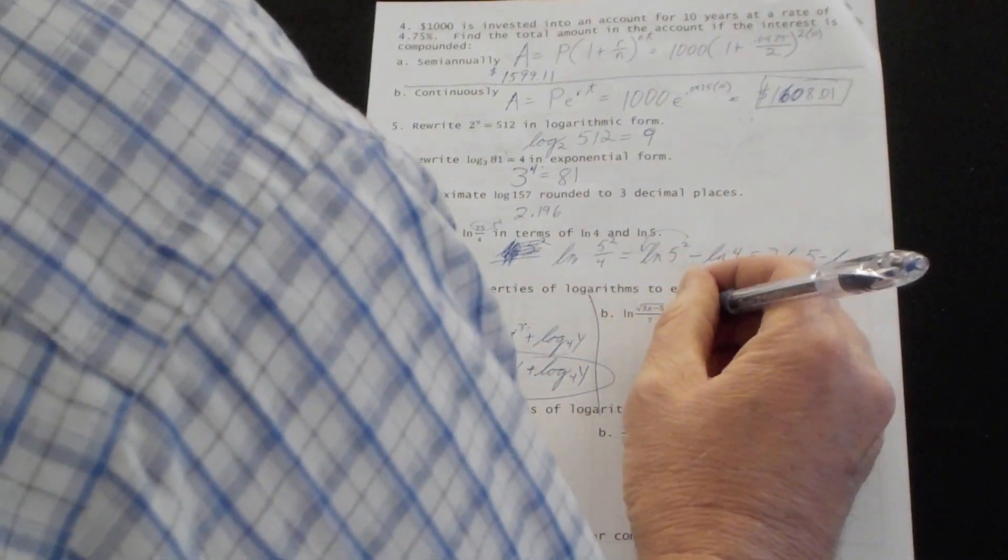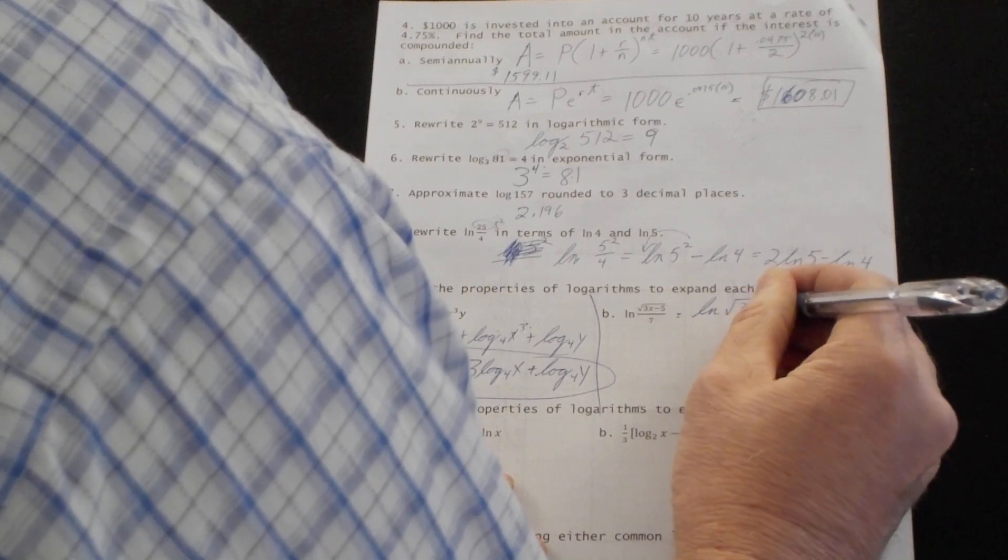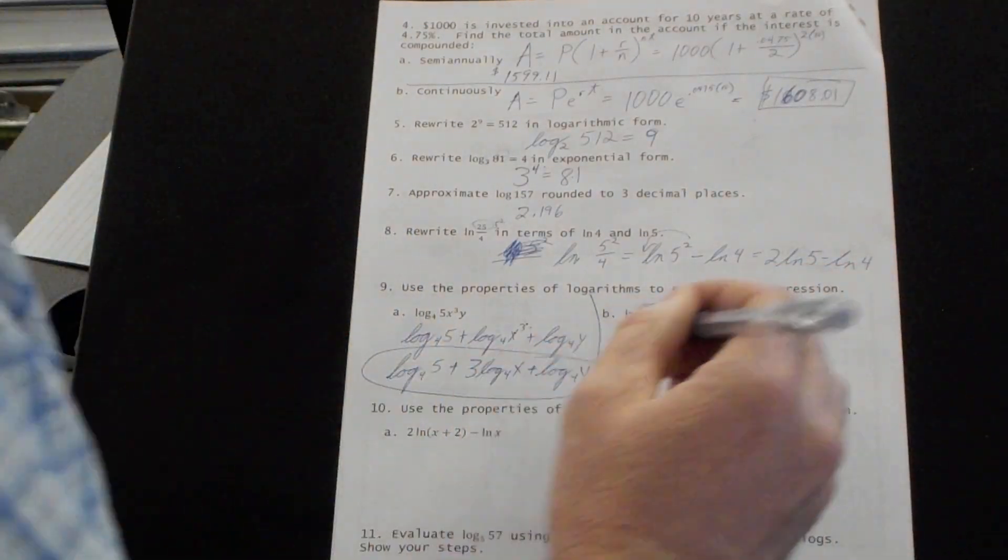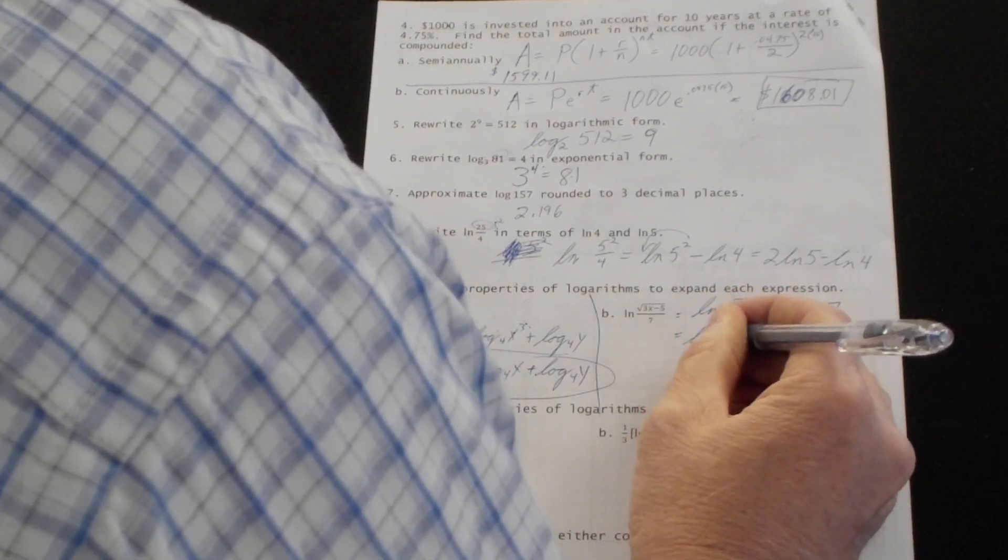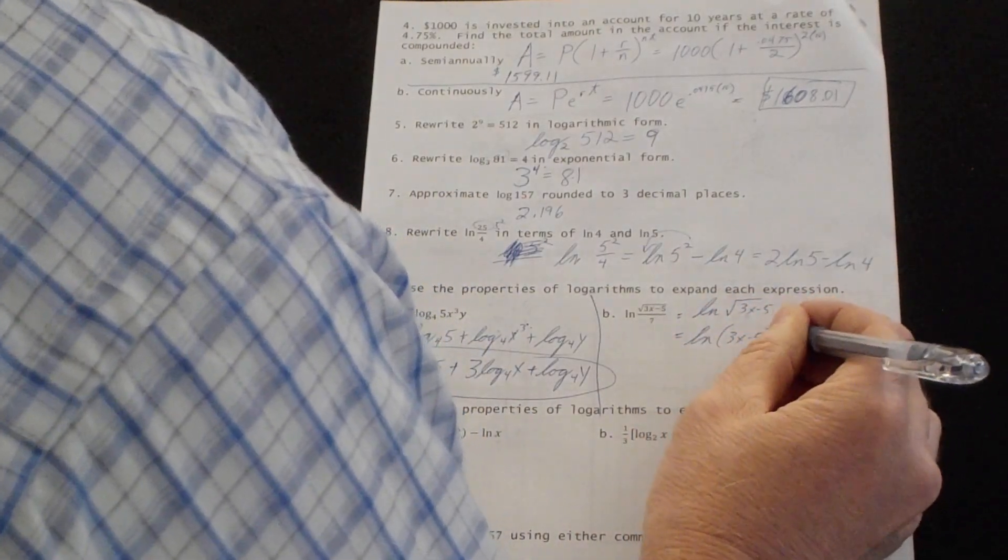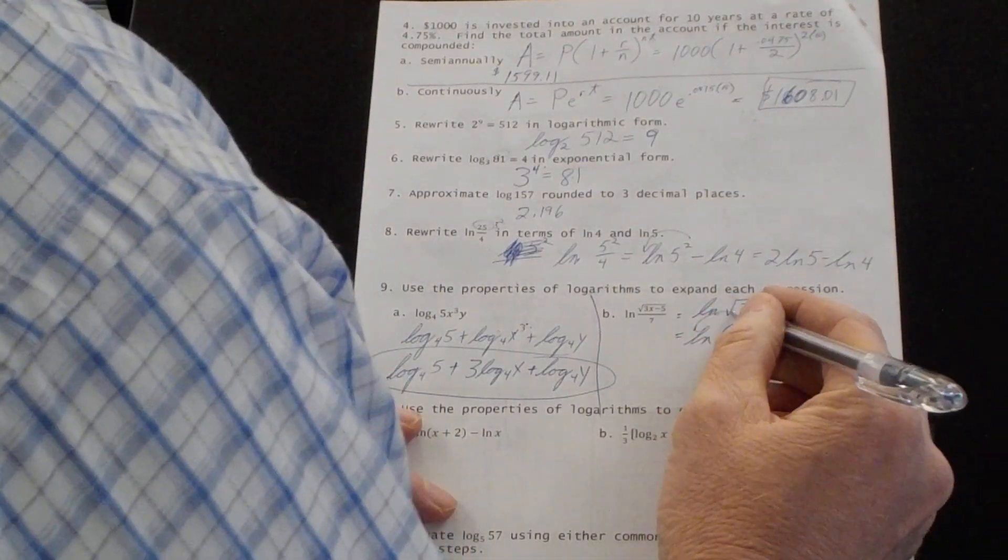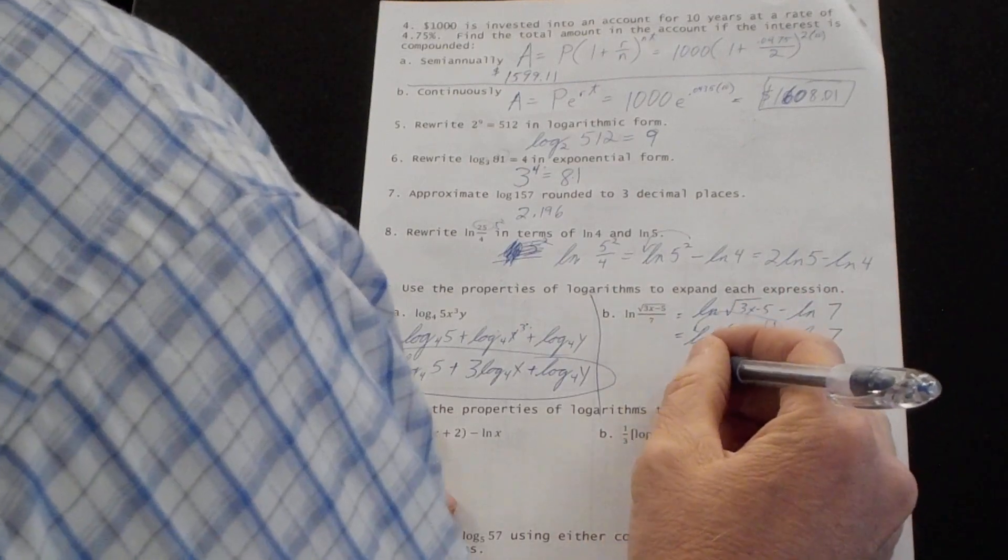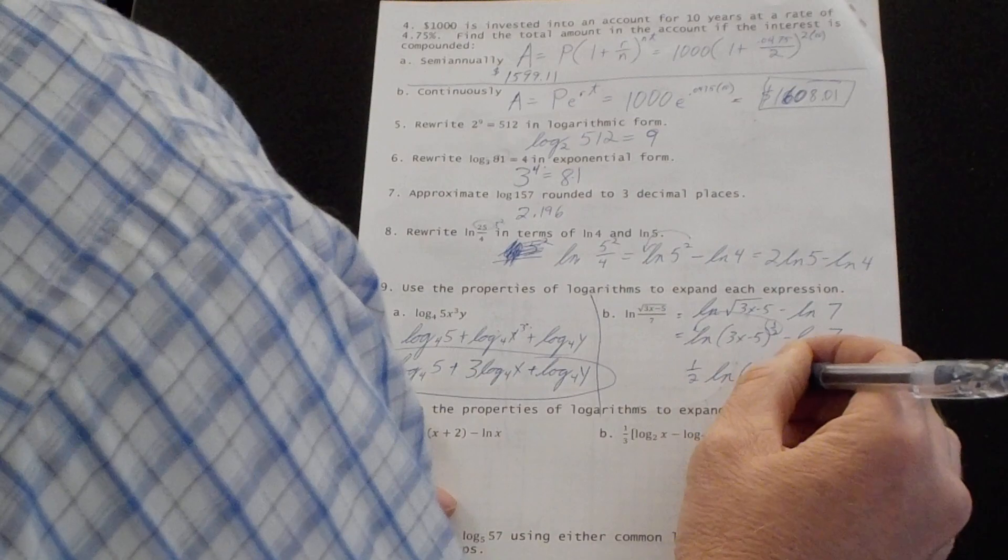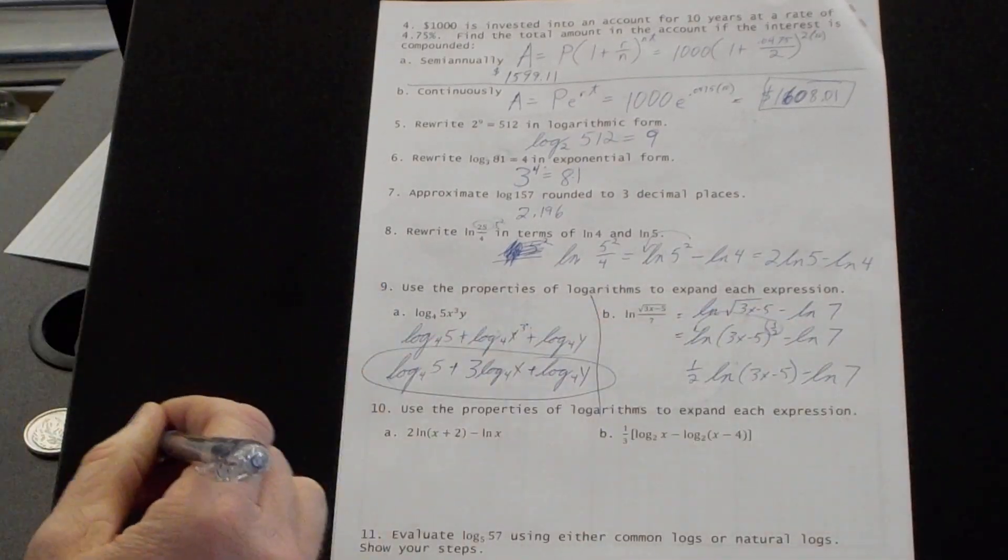And division means subtract. So let's take the natural log of the square root of 3x minus 5 minus the natural log of 7. And I'm going to write this as the natural log of 3x minus 5 to the 1 half power minus the natural log of 7. And I'll bring that half power. Square root is a half power. 1 half natural log of 3x minus 5 minus the natural log of 7. That is expanded.